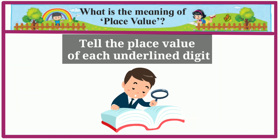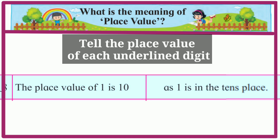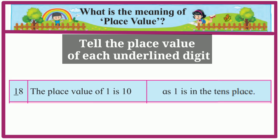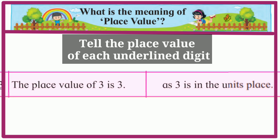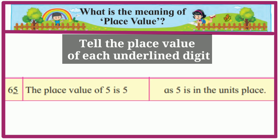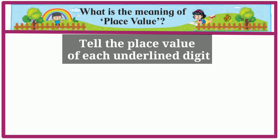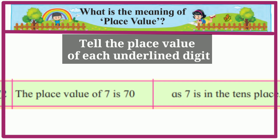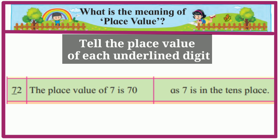Tell the place value of each underlined digit. 18: the place value of 1 is 10, as 1 is in the tens place. 23: the place value of 3 is 3, as 3 is in the units place. 65: the place value of 5 is 5, as 5 is in the units place.